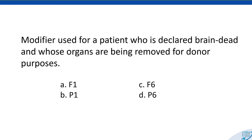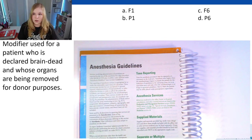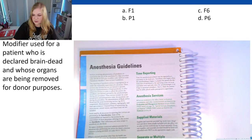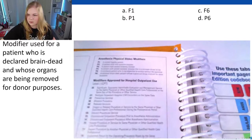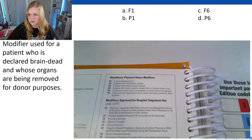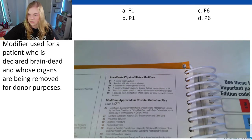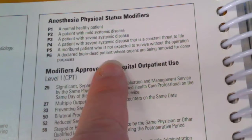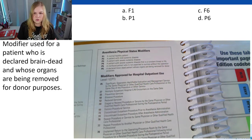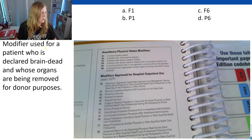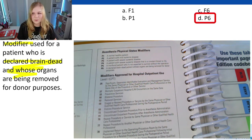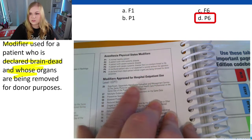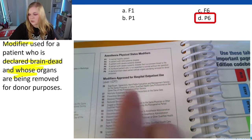Now let's go through a couple of cases. What is the modifier used for a patient who is declared brain dead and whose organs are being removed for donor purposes? We have four options: F1, P1, F6, or P6. Those modifiers are right in the inside flap of the CPT book. P1 is the normal healthy patient, P5 is a moribund patient, and P6 is a declared brain-dead patient whose organs are being removed for donor purposes. So the answer is P6. As long as you know where those physical status modifiers are, you'll do really well on that anesthesia question.